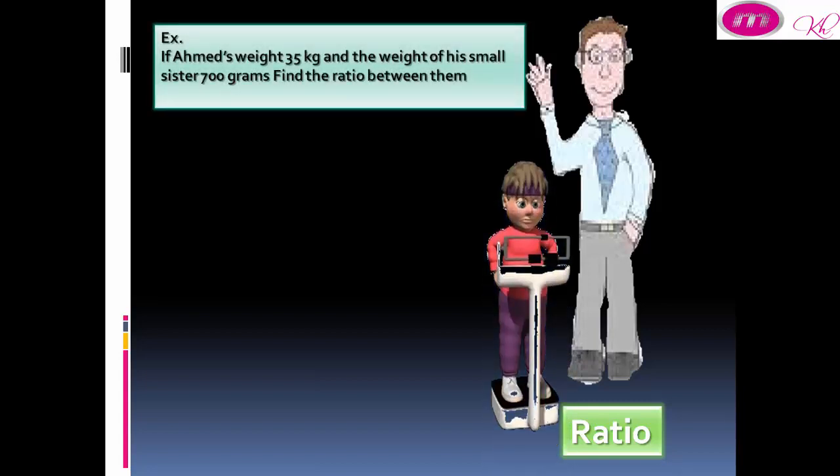Example: if Ahmed's weight is 35 kg and the weight of his small sister is 700 grams, find the ratio between them.